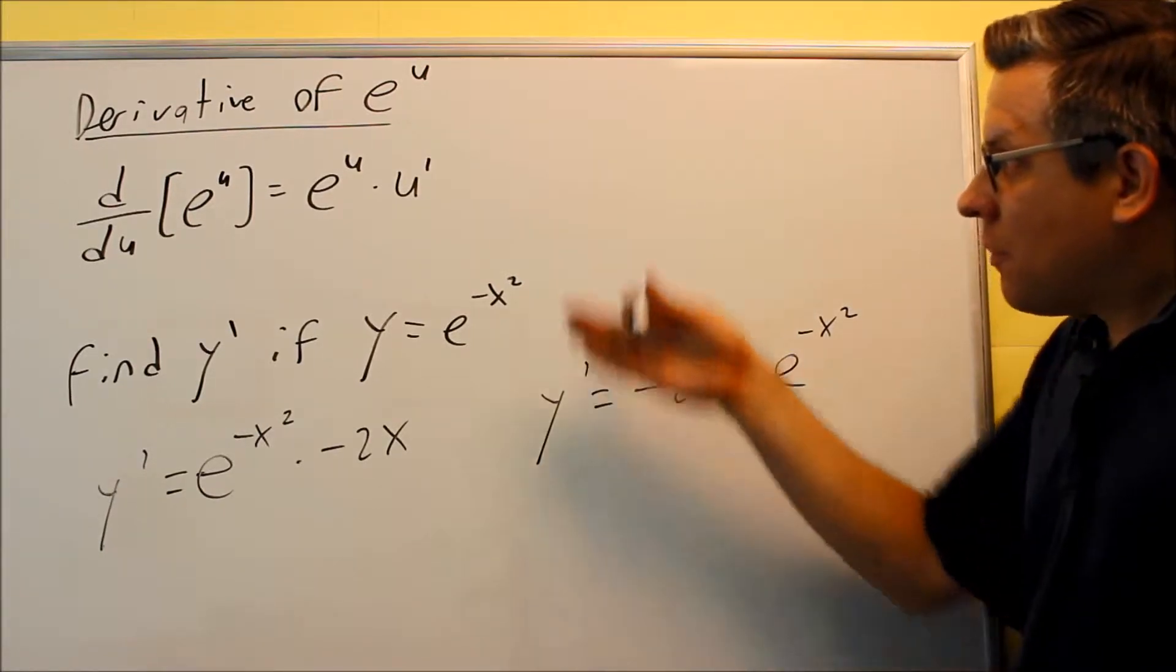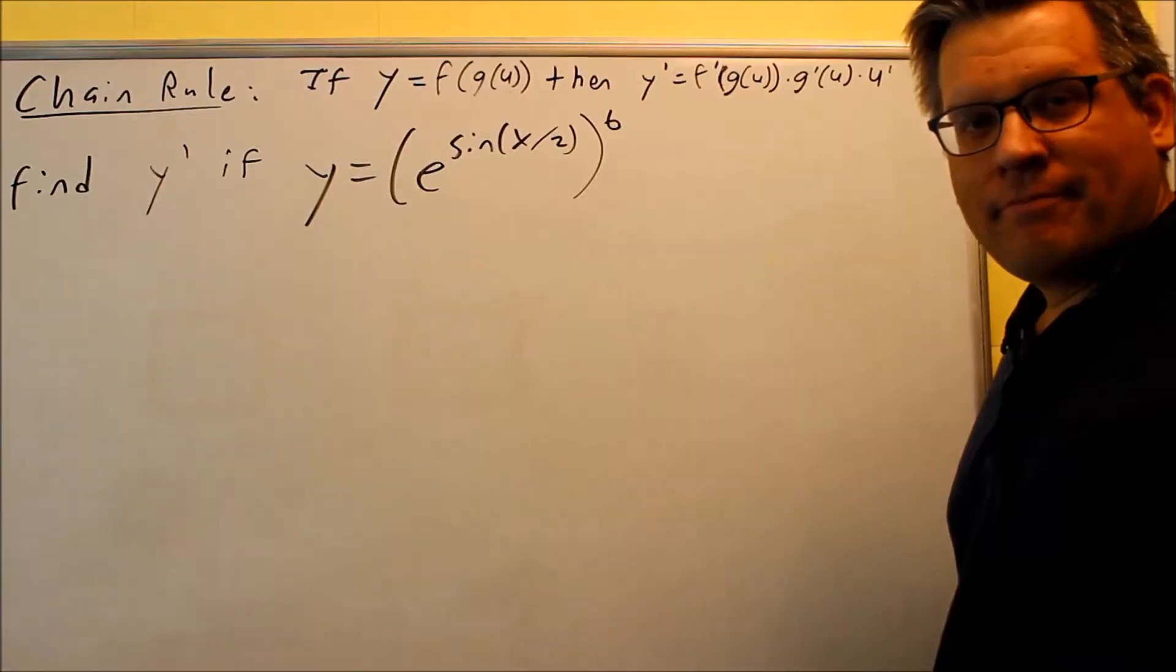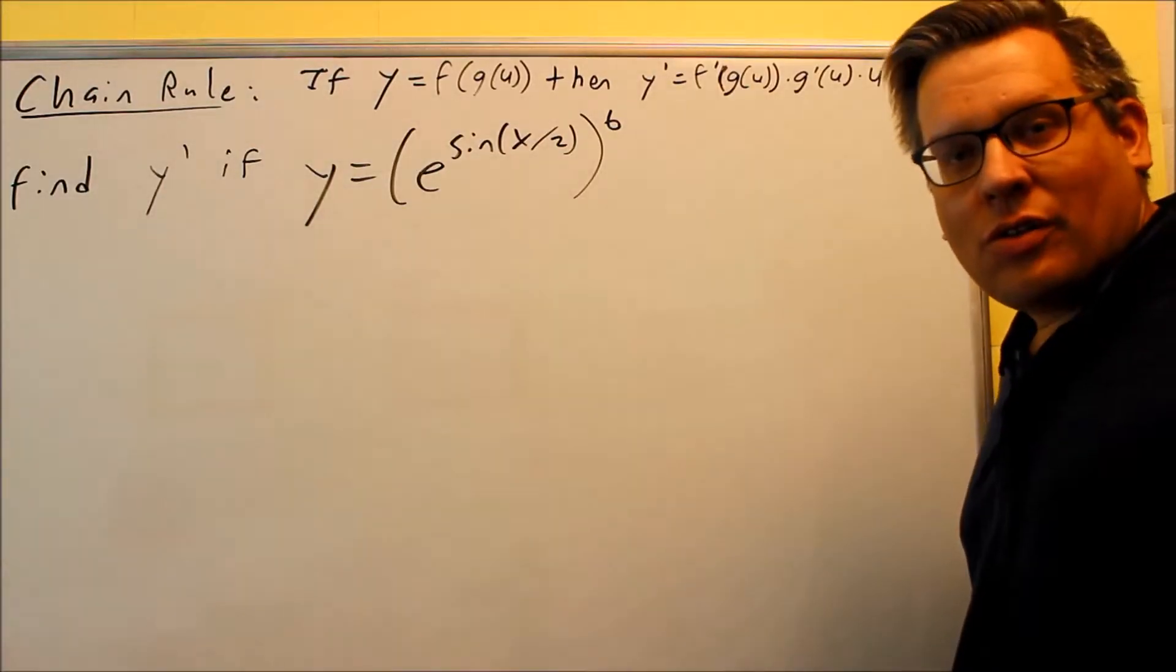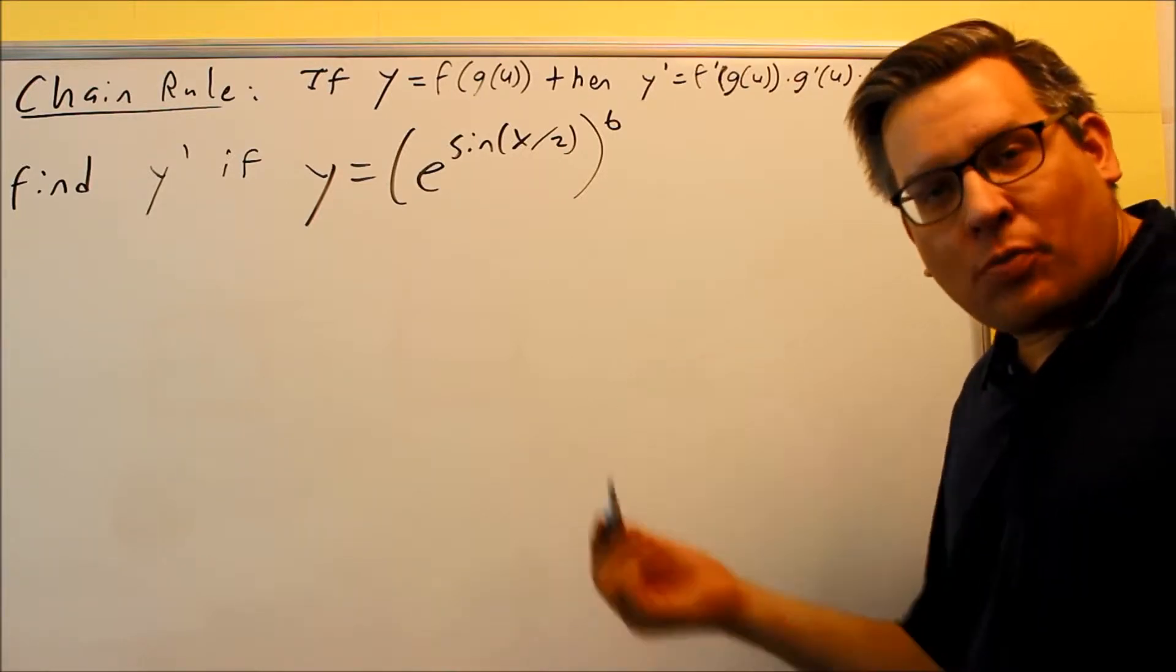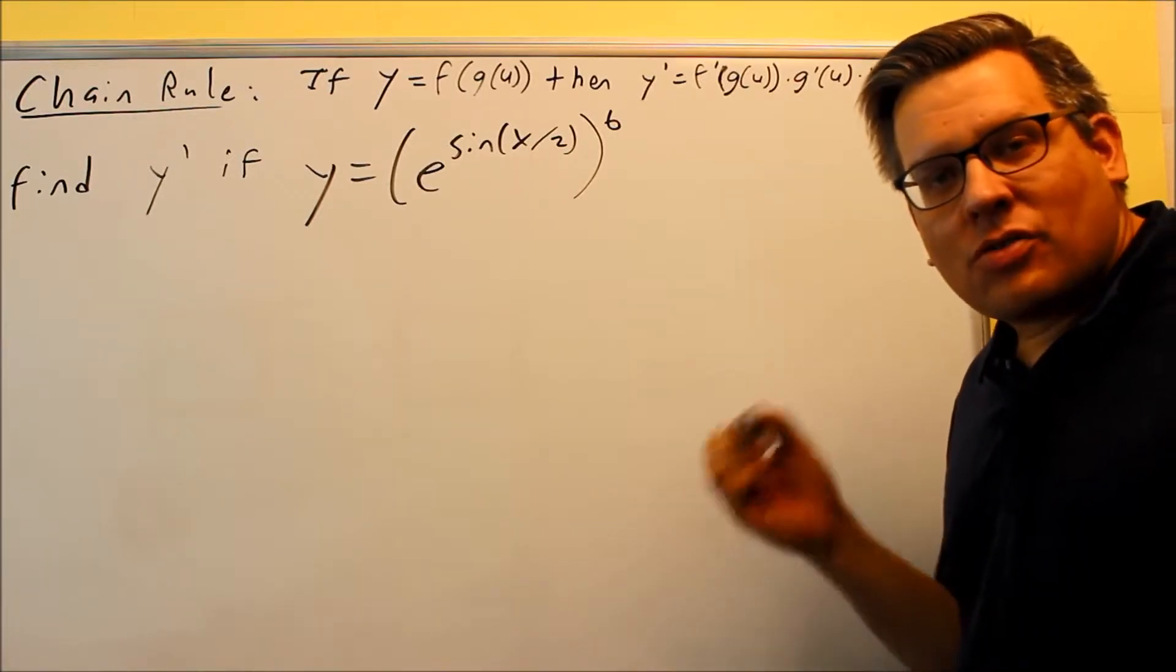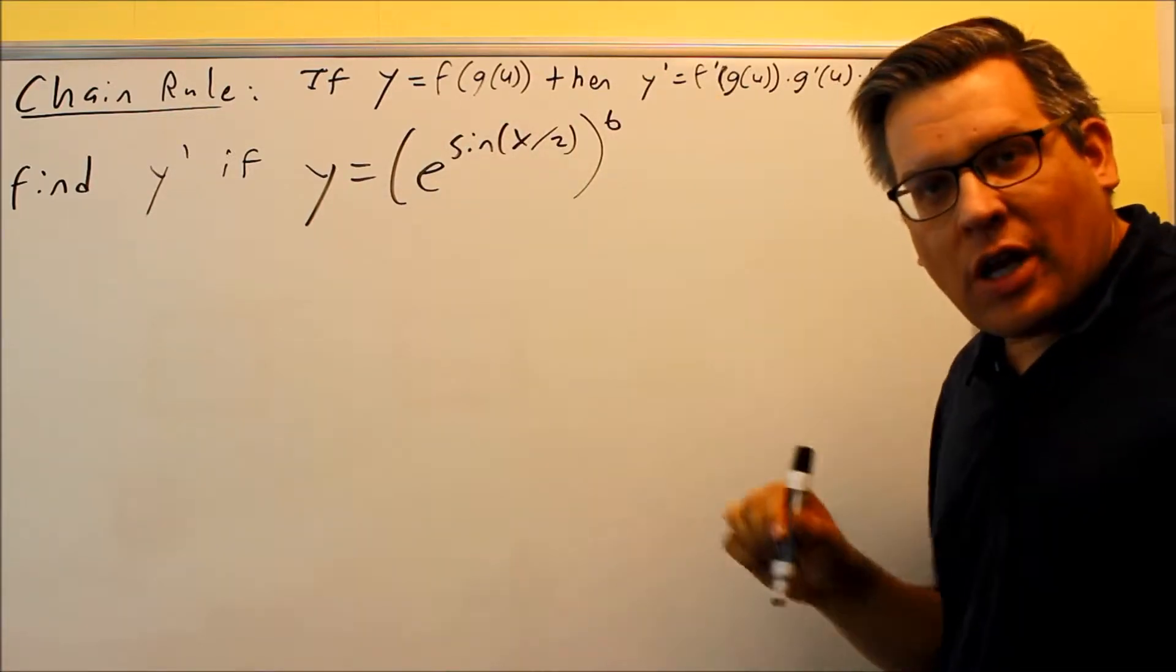So now that we've done this example, let's look at a little bit more complicated example. Okay, so we just looked at how you find the derivative of e to the u. And the derivative is e to the u times u prime. That's how you would do it. So now let's look at a little bit more complicated example and put that to use.